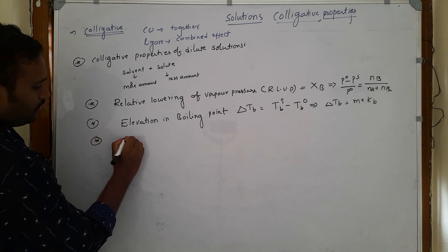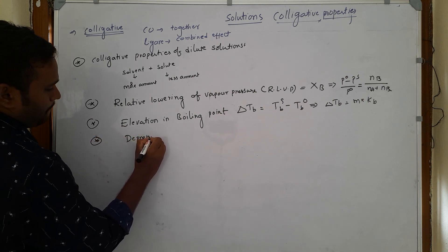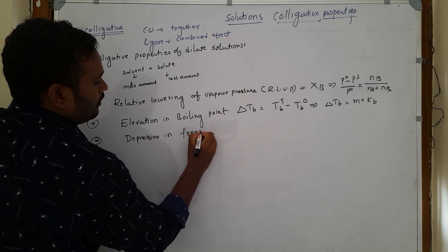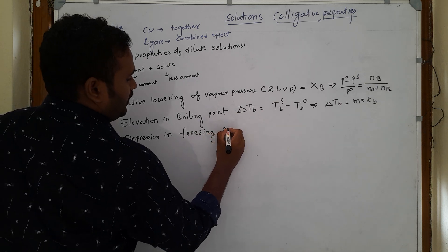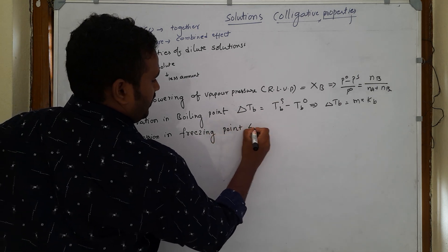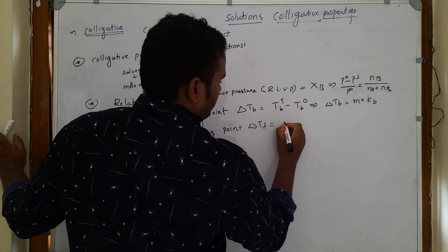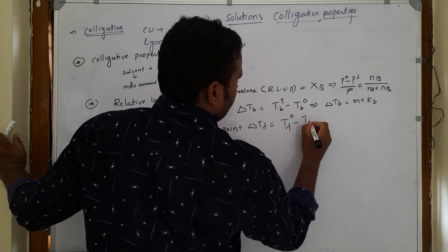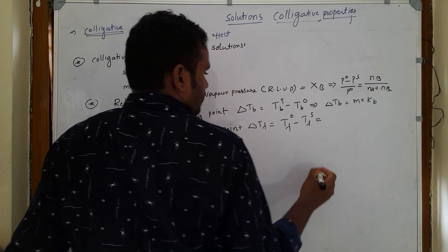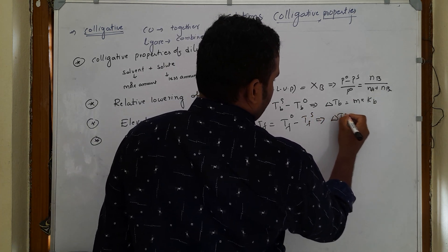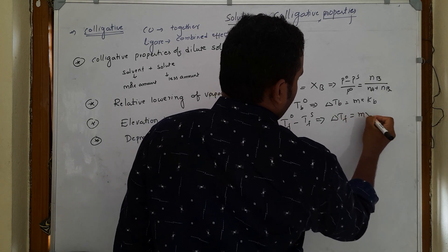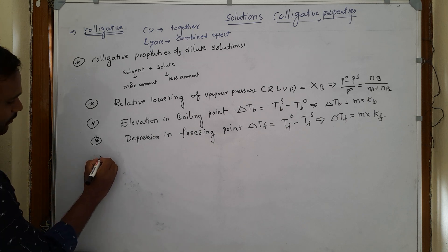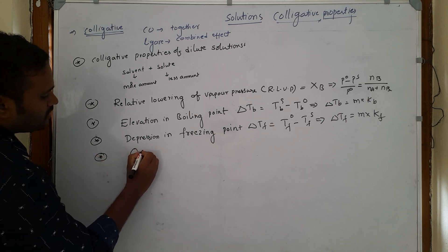The third colligative property is depression in freezing point. Here, delta Tf equals Tf0 minus Tfs, and that is equal to delta Tf equals M into Kf. The fourth colligative property is osmotic pressure, indicated by pi, where pi equals CRT.